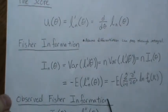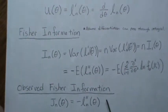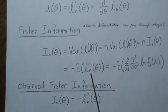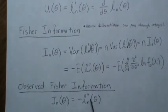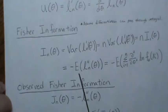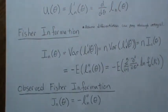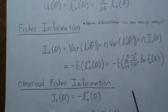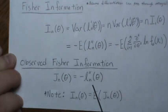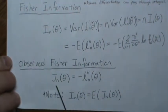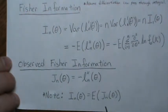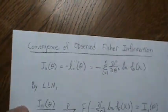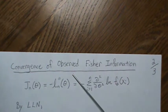The observed Fisher information is just the negative second derivative of the log likelihood. The expectation averages over all possible values, but if we don't average, that's what we observed. We can note that if we take the expected value of the observed Fisher information, it equals the theoretical Fisher information.